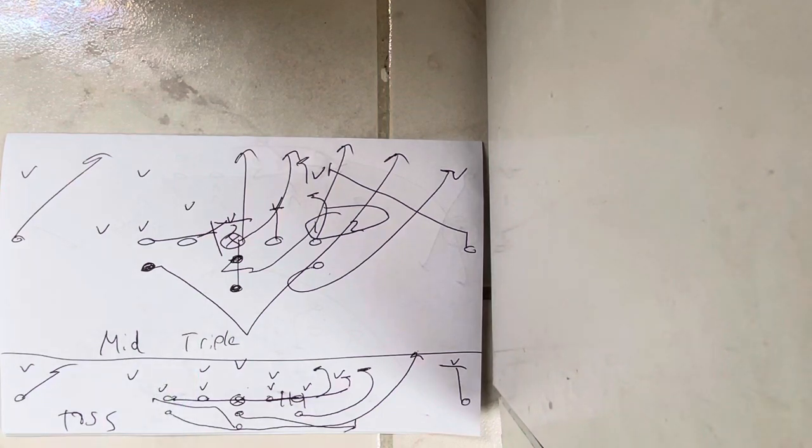Number one is the triple option. When you put the receivers out wide and that's how you want to run the offense, the number one play Army, Navy, and Air Force run when they split the receivers out wide is triple.